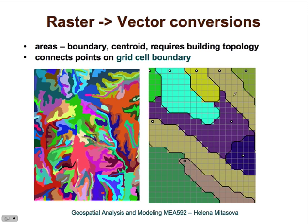Here is an example of conversion between raster areas to vector polygons. When converting data at relatively low resolution you will have some effects of the grid cell geometry. However, that can be smoothed out using different smoothing algorithms for lines.